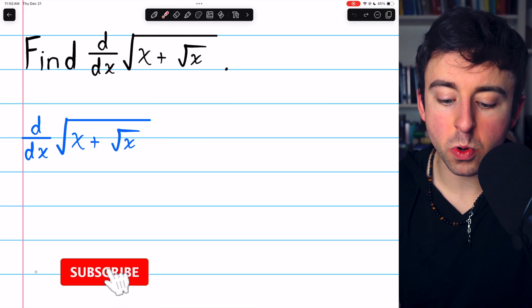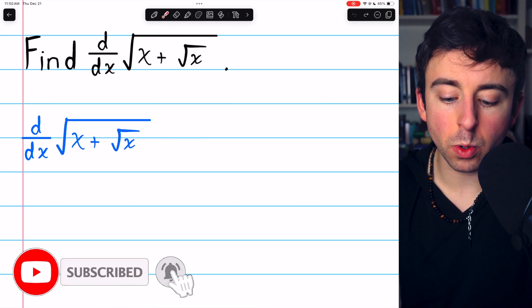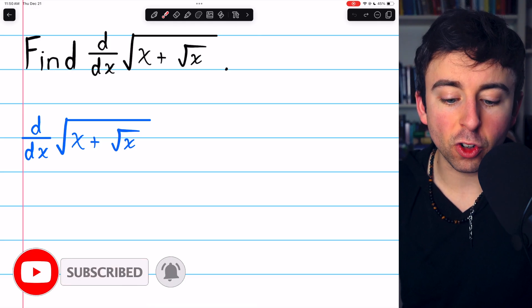To take the derivative of the square root of x plus the square root of x, we're going to need the chain rule.